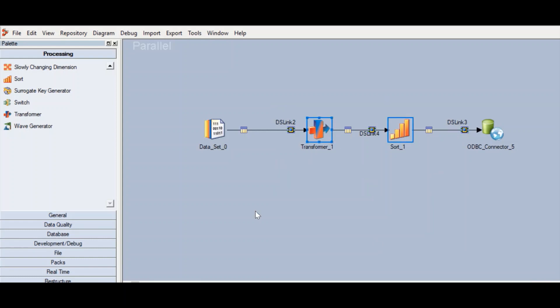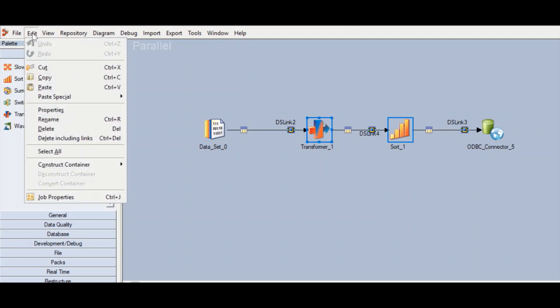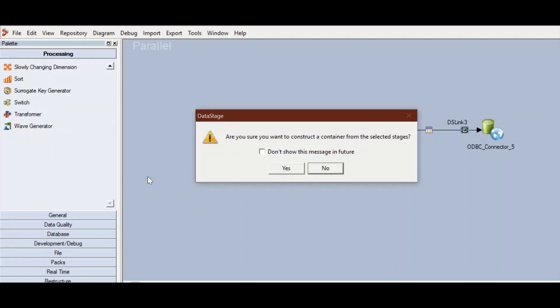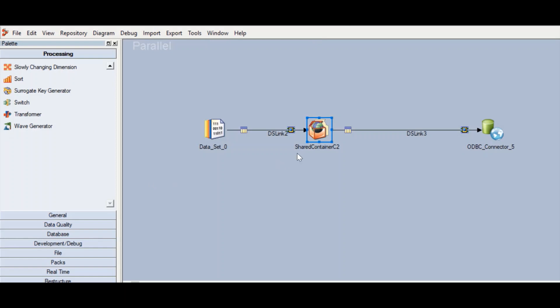If you want to convert this portion of the code to a container, just select that portion that you want converted and go to the menu. Click on Edit. Once you click on Edit, this dropdown will come. You have to select Construct Container and you can select local or shared. In this case we are going to select shared and we can just click on yes. It will be converted into a shared container.